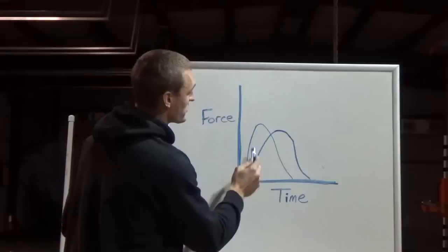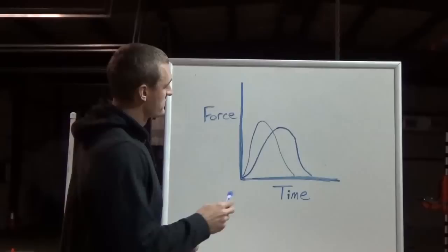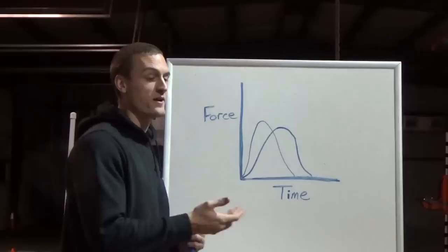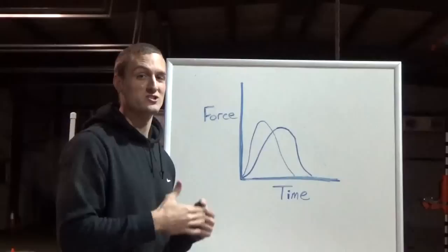And you're going to need faster force production. So if you become able to produce this same impulse in a shorter ground contact time, that's going to give you a combination of two things when you sprint. One, you're going to be able to move over the ground faster. You're going to increase your top speed.